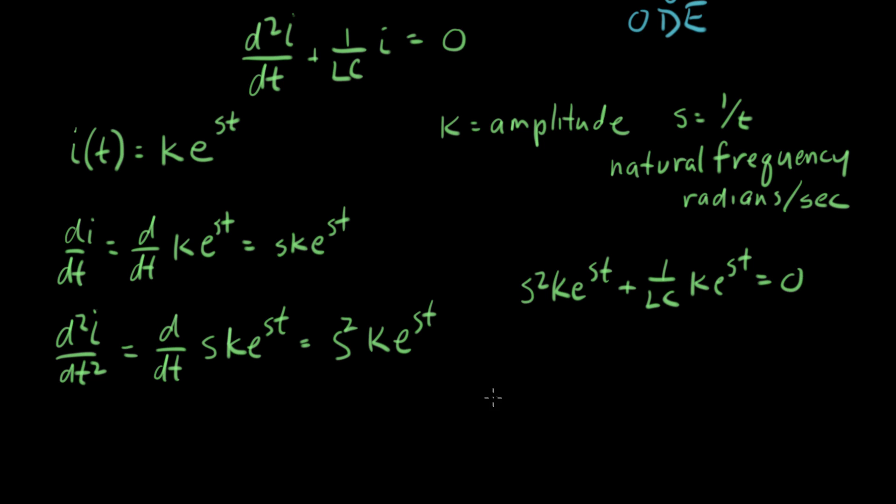Let's do a little factoring. There's a common term here: k e to the st and k e to the st. So let me factor that out: k e to the st times what's left, s squared plus one over LC, equals zero.